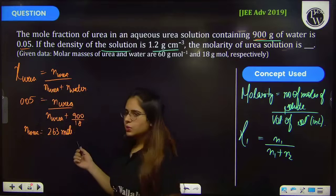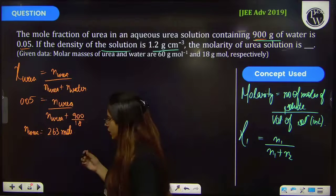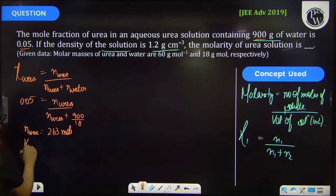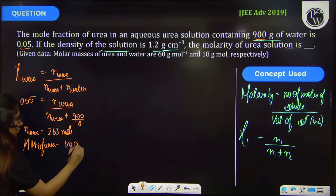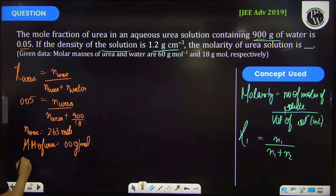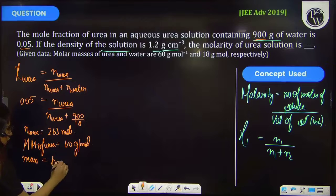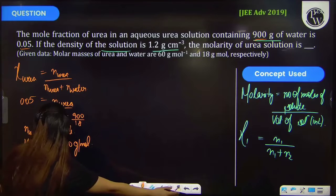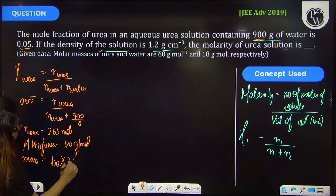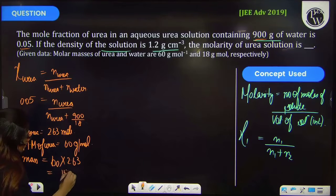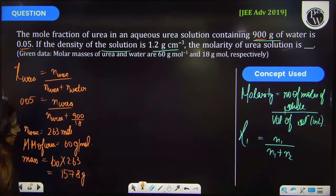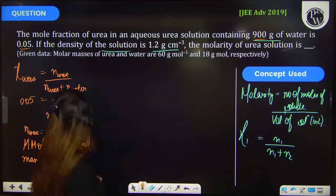By using these moles, you can calculate the weight of urea. We know that the molar mass of urea is 60 grams per mole, so the mass of urea will be 60 into 2.63, and on solving you will get 157.8 grams. This is the mass of urea.